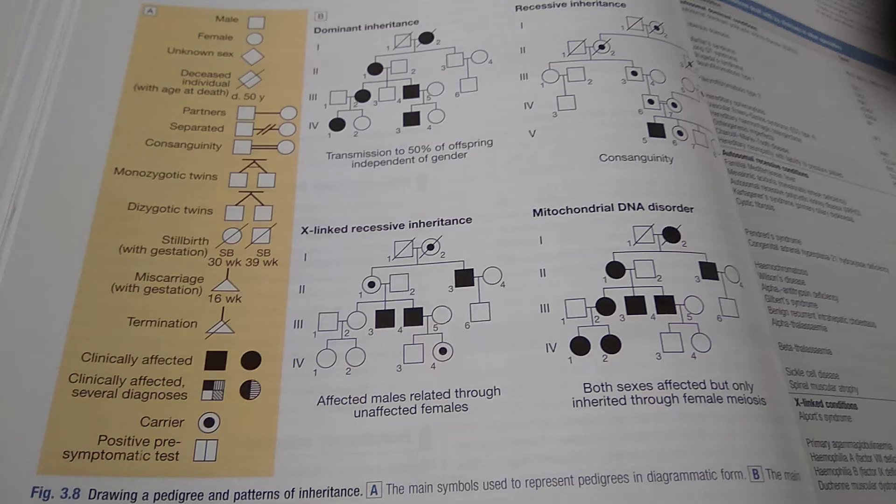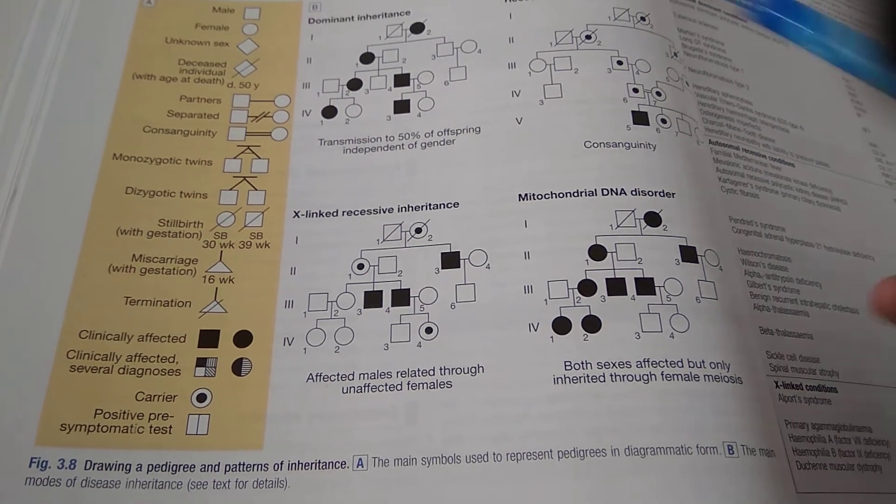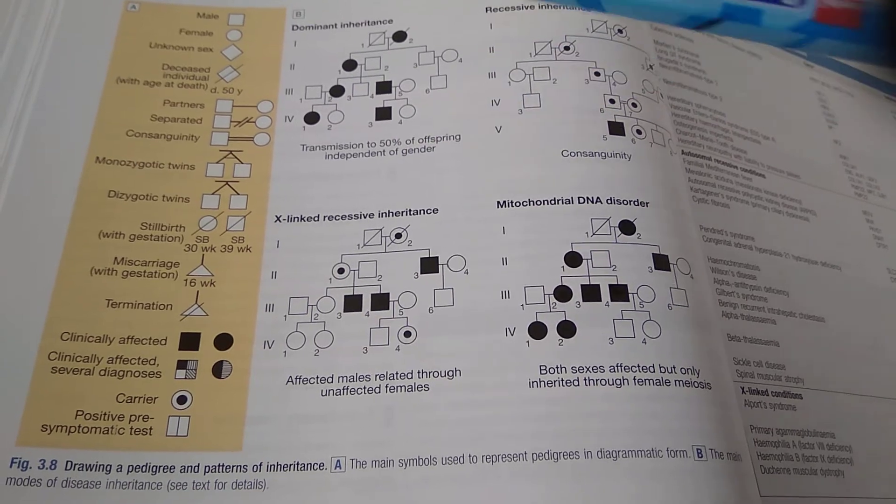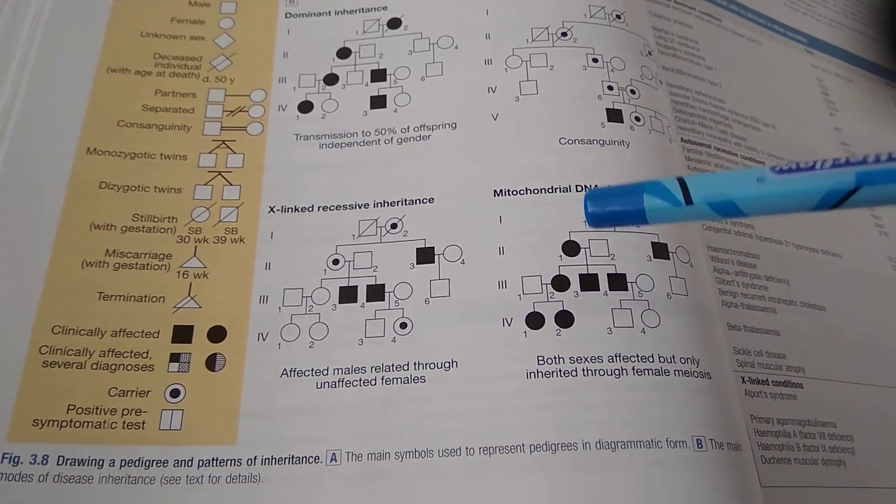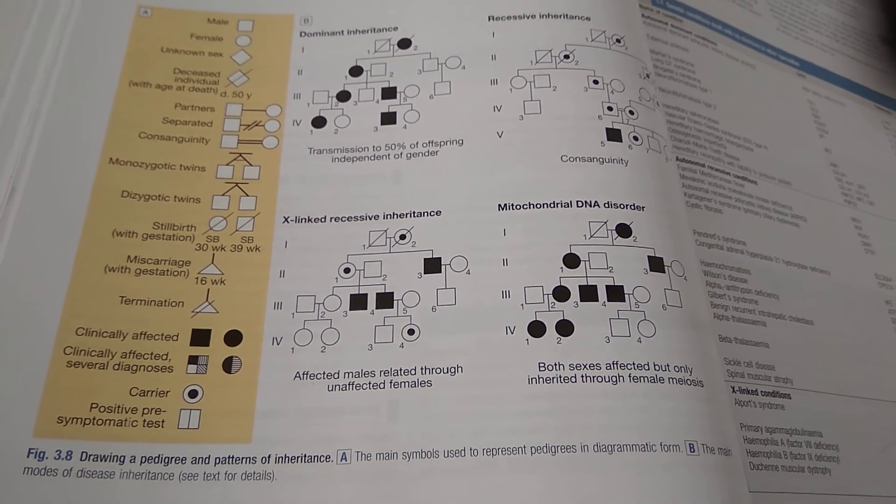So this is all about the pedigree chart. You have looked at the symbols, you have looked at a dominant inheritance, recessive inheritance, X-linked inheritance, and a mitochondrial DNA disorder. That's all for now in this video. Bye bye.